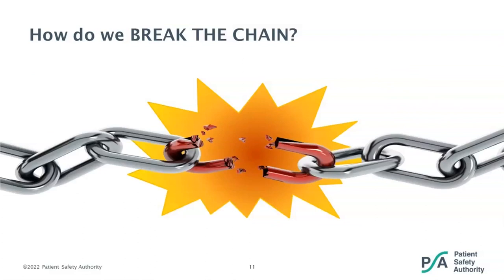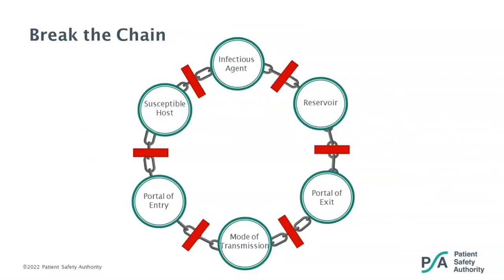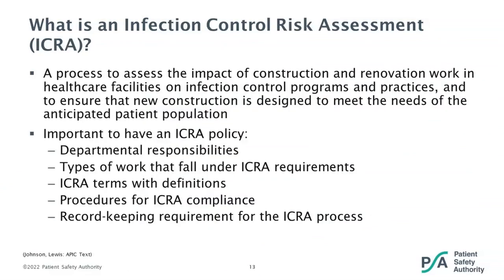The key to preventing infections during construction and renovation is to break the chain of infection. This break in the chain can happen at any junction between the links — it just takes stopping one connection to prevent the infection, and it doesn't matter where in the chain of infection this break occurs. This brings us to the Infection Control Risk Assessment, or ICRA. This is a process to assess the impact of construction and renovation work in healthcare facilities on infection control programs and practices, and to ensure that new construction is designed to meet the need of the anticipated patient population. Essentially, an ICRA is how you plan for an upcoming construction or renovation project.